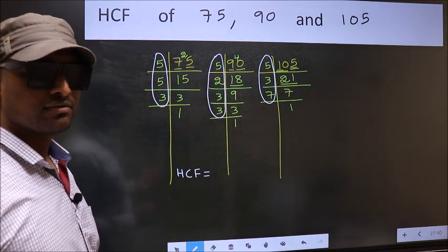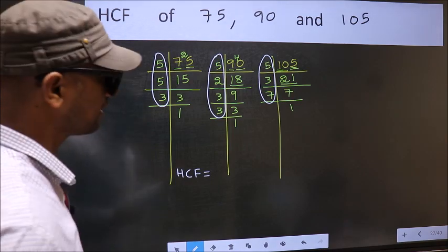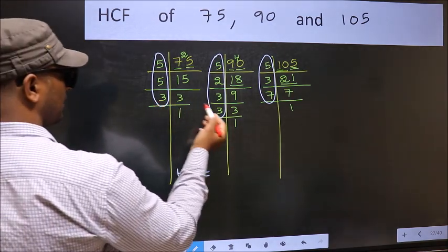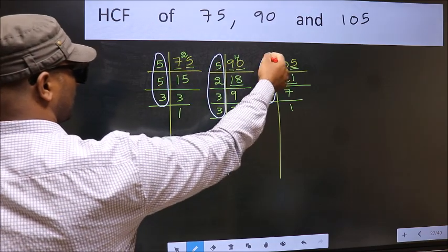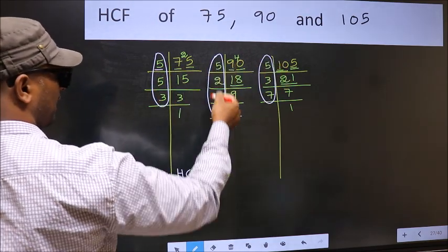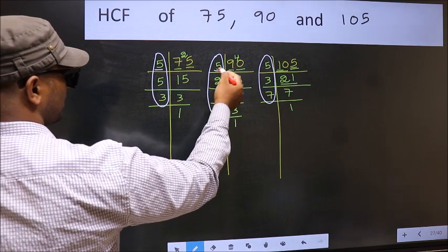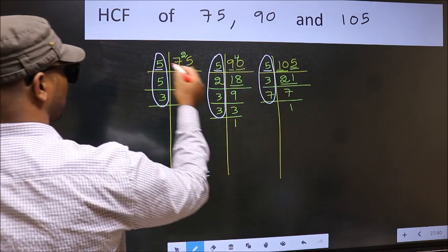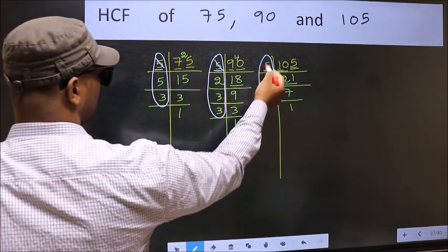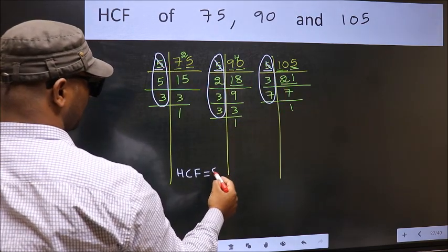So now, let us find the numbers which are present here, here, and also here. Starting with the number 5. Do we have 5 here? Yes. So go to the next place. Do we have 5 here? Yes. So cut 5 and write here.